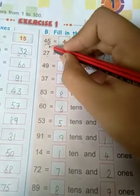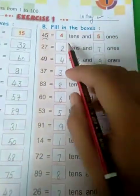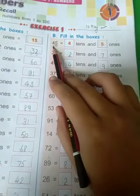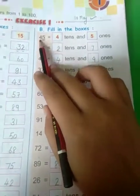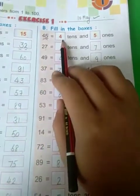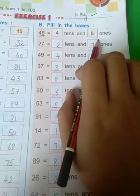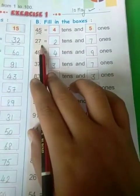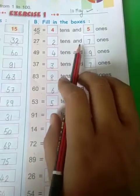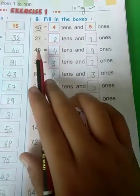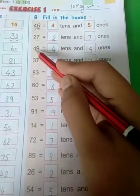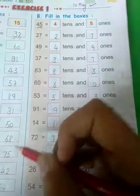Now number is given. We will tell that 4 is in which place and 5 is in which place. 45 is there. 4 tens and 5 ones. 27 is there. 2 tens and 7 ones. 49, 4 tens and 9 ones.